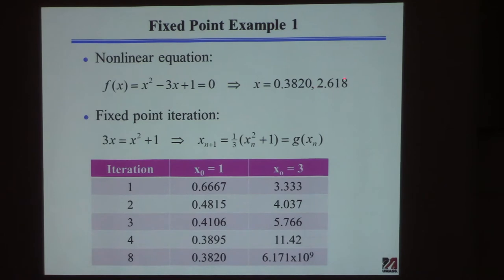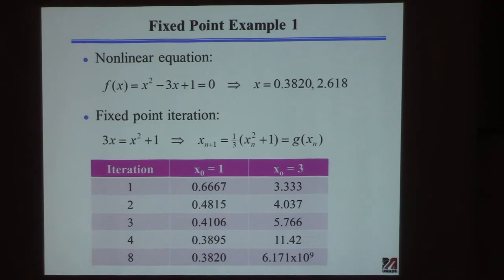I tried x equal three because I was looking to find the other solution. So I tried x equal three, and this happened — I hope you understand this is not desirable. This is divergence — it went the wrong direction, away from the solution. By eight iterations it reached a billion or something.